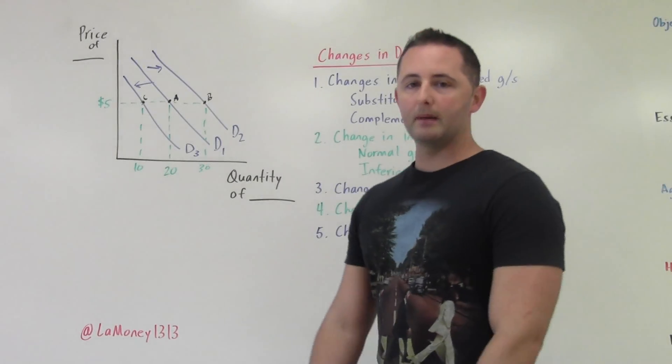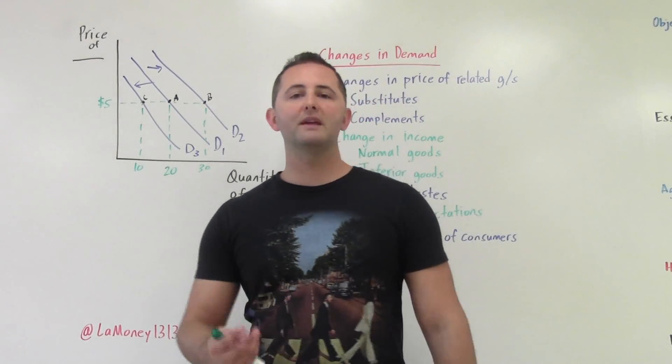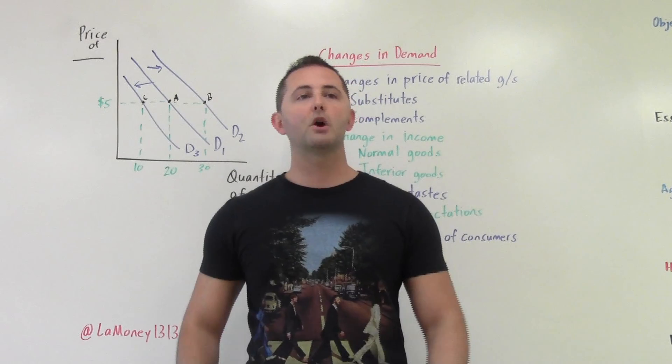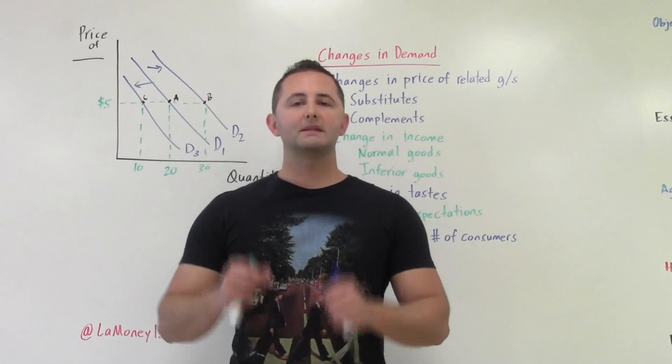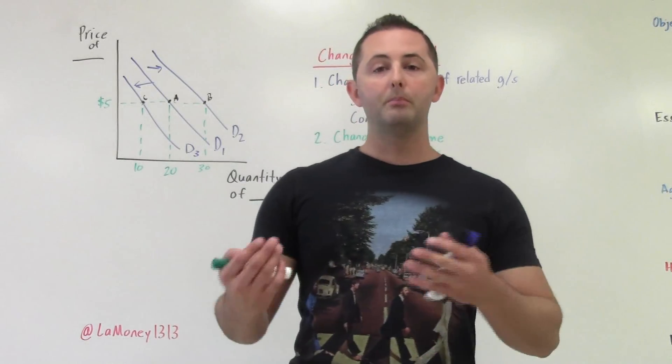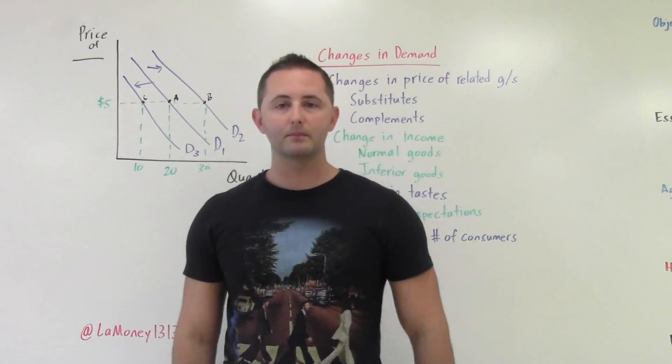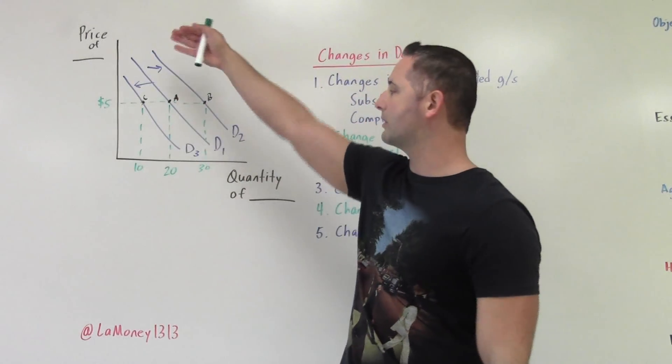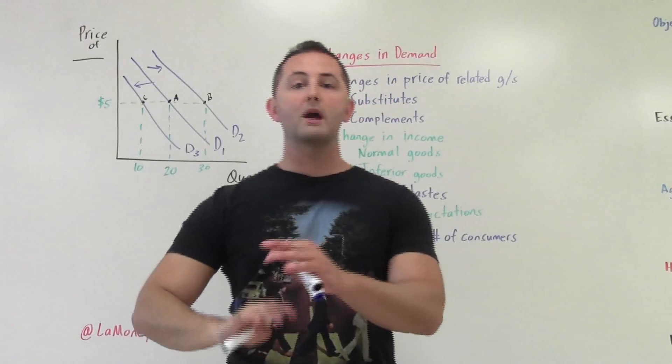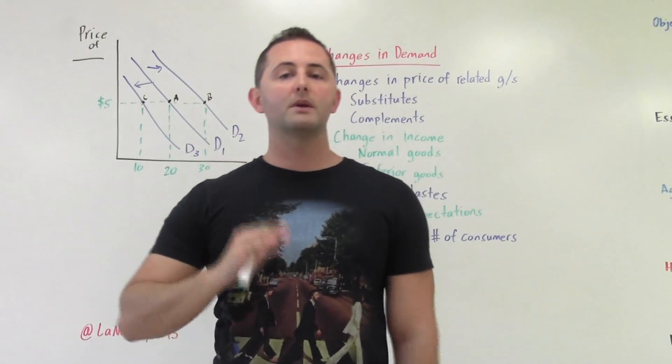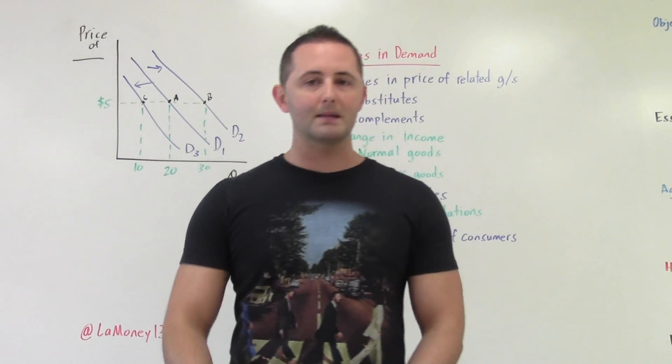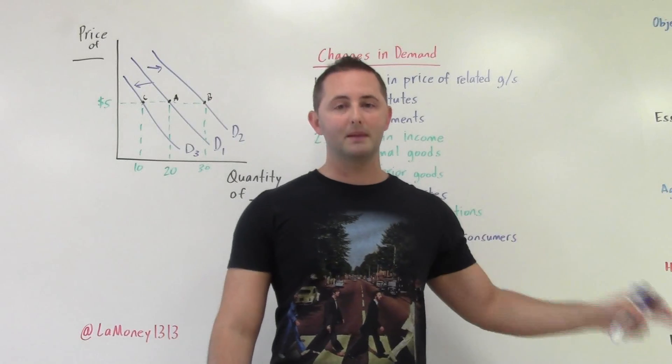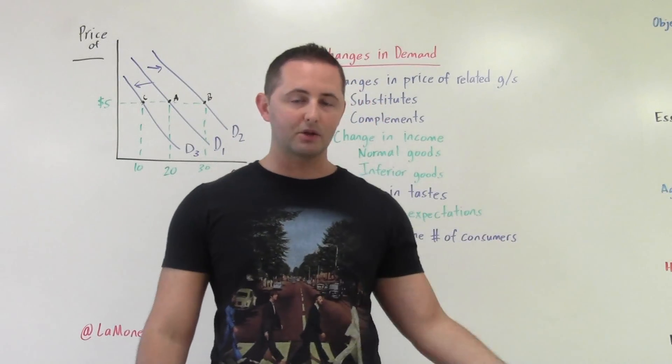On the other hand, complements work the opposite way. Complements are two things that go together. So hot dogs and hot dog buns. So let's say we are looking for hot dog buns. That is our item. So we have the price of hot dog buns, quantity of hot dog buns. Price doesn't change. Price of hot dog buns remains constant. What's going to determine whether or not we buy hot dog buns, buy more or less? Well, it's the price of the complement, the thing that goes with it, which is hot dogs.